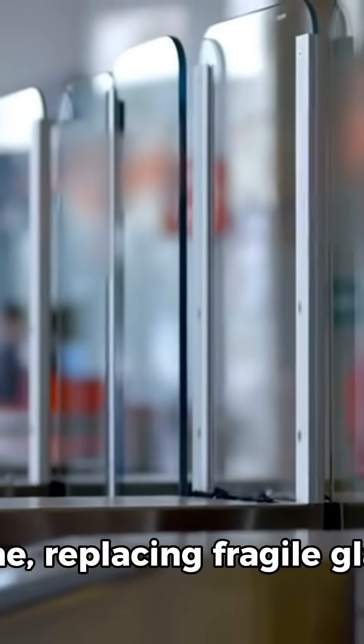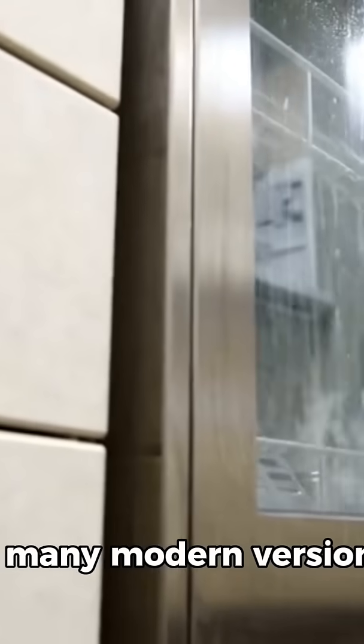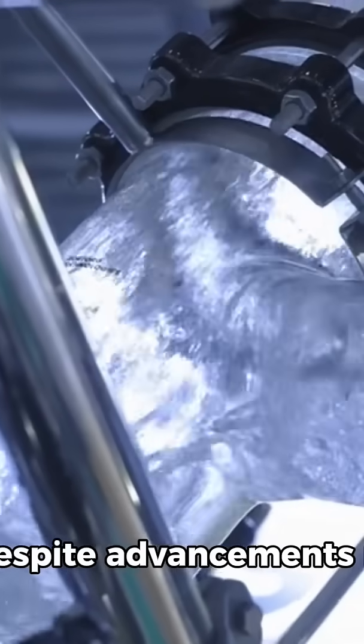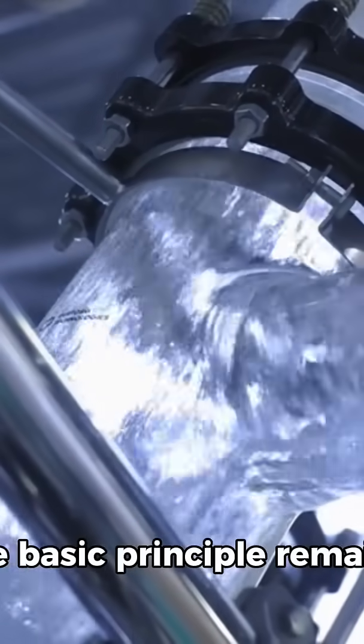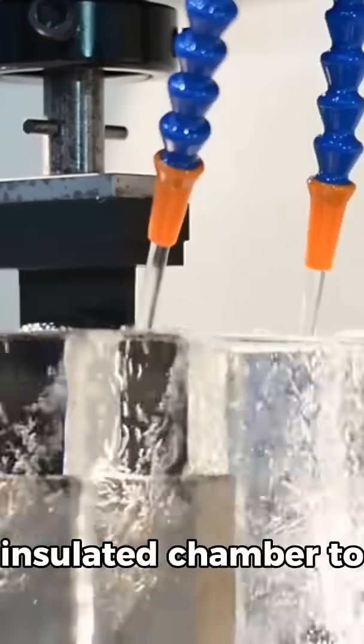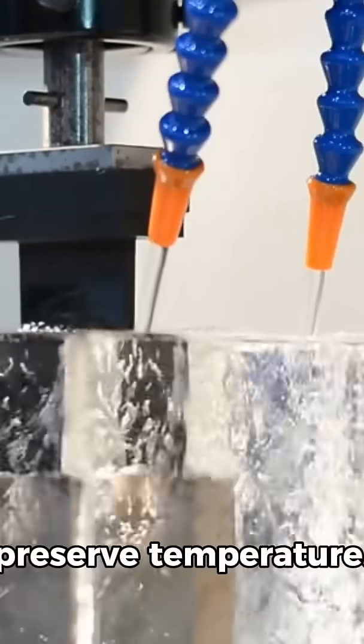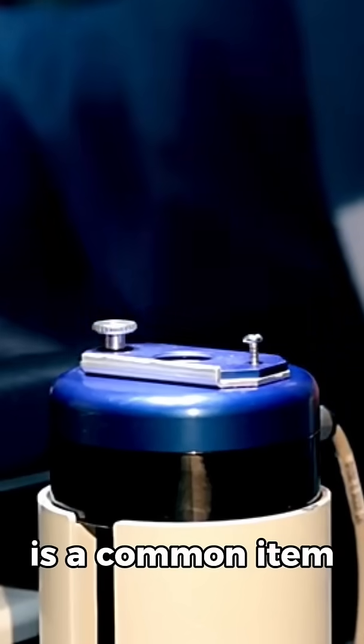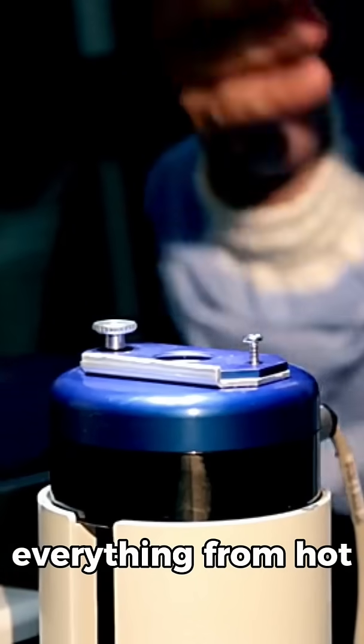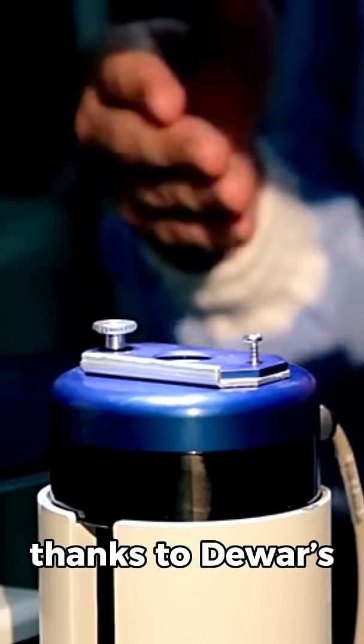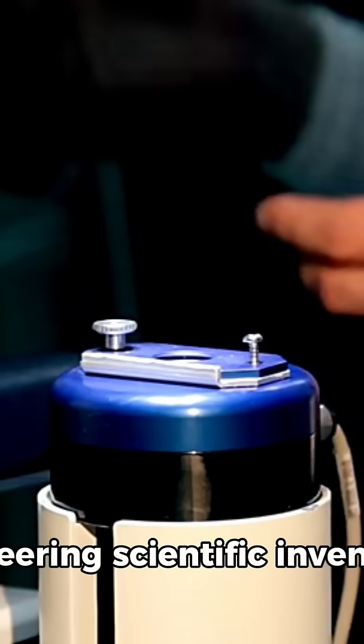The design has evolved over time, replacing fragile glass with durable stainless steel in many modern versions. Despite advancements in materials and production, the basic principle remains the same, using a vacuum-insulated chamber to preserve temperature. Today, the Thermos flask is a common item worldwide, used for everything from hot coffee to cold water, all thanks to Dewar's pioneering scientific invention.